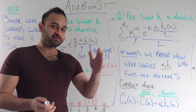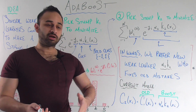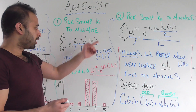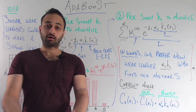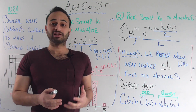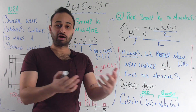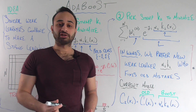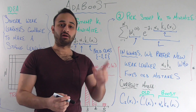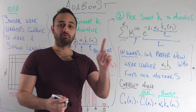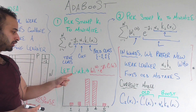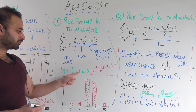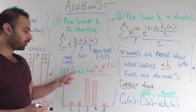So no matter what y i is — whether it's one or negative one — this quantity is going to measure our error. When we pick our best k one and alpha one, that's going to fully define our first level model. Our first level model, c one, is going to be alpha one k one.